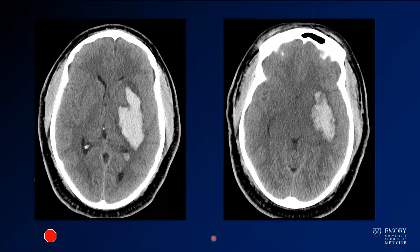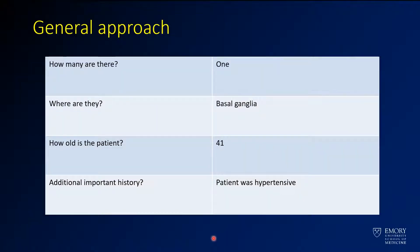When you think about your systematic approach, you want to think about how many hemorrhages there are. This patient has one, and it's centered in the left basal ganglia.